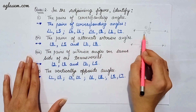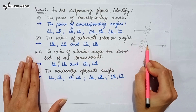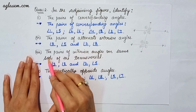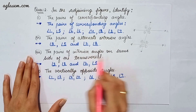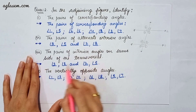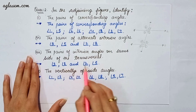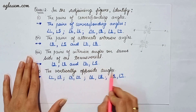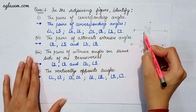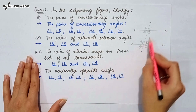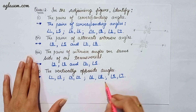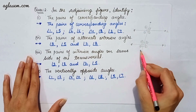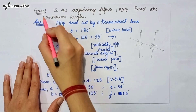The third part asks for the pair of interior angles on the same side of the transversal: angle 3 and angle 8, and angle 2 and angle 5. The fourth part asks for vertically opposite angles: angle 1 and angle 3, angle 2 and angle 4, angle 6 and angle 8, and angle 5 and angle 7.